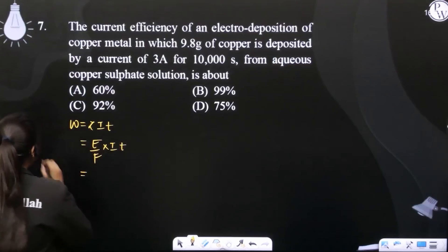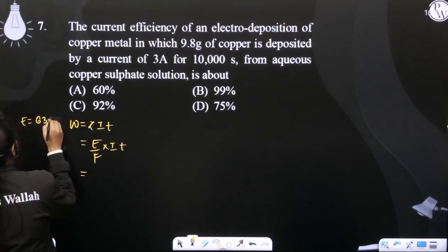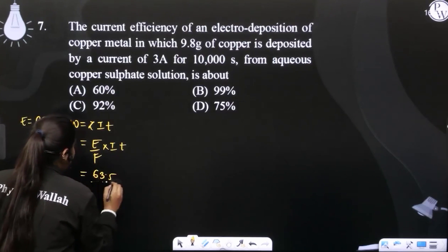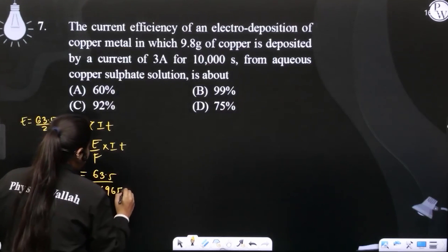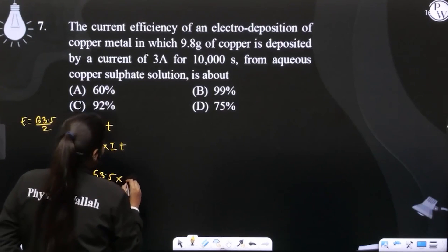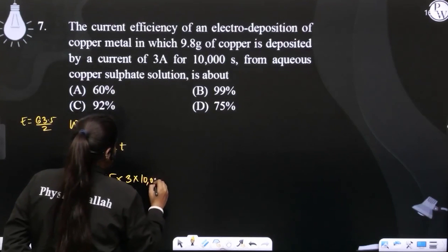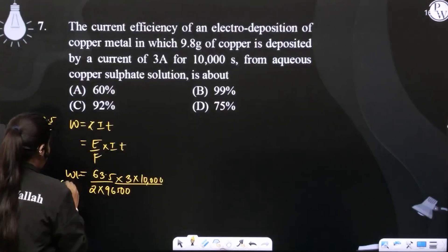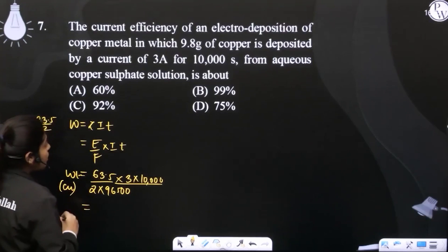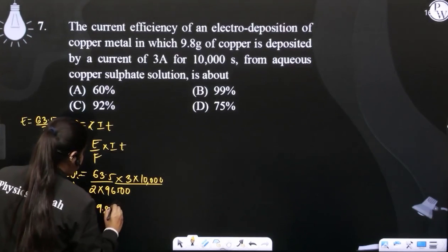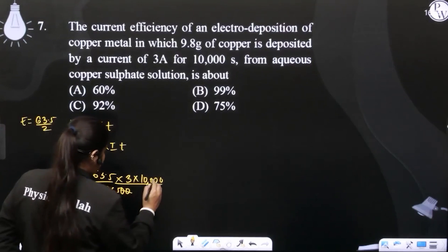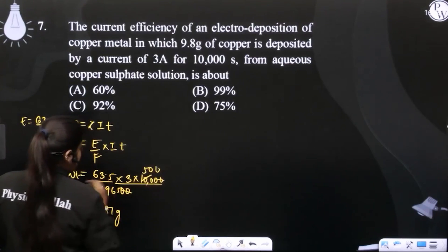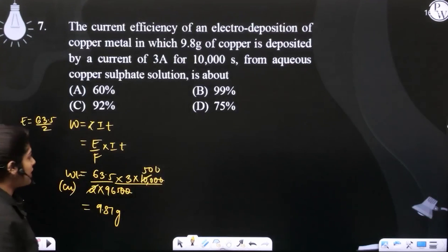E, that is equivalent weight. Copper's equivalent weight is 63.5 divided by 2. So 63.5 divided by 2 into the Faraday, current 3 amperes, 10,000 seconds. So here will come the weight of copper which actually should be deposited. So here will come 9.87 grams.